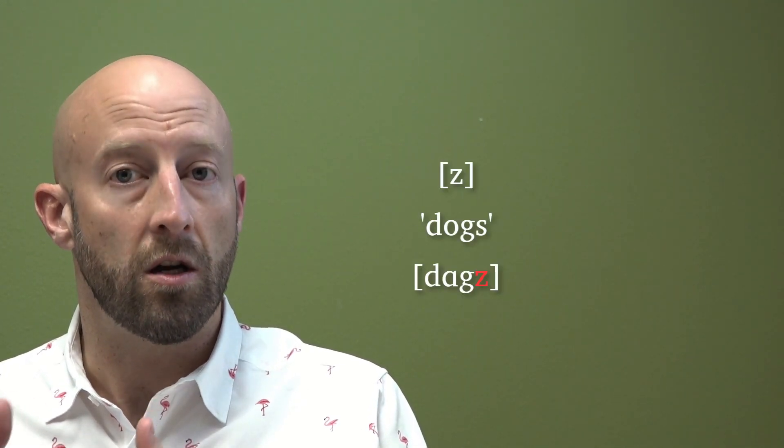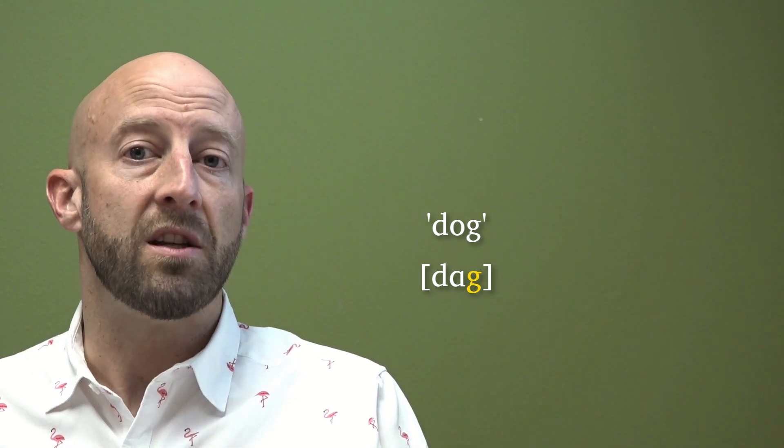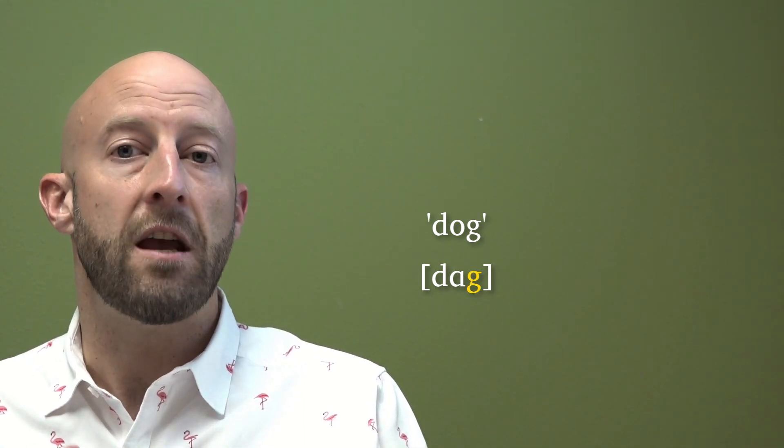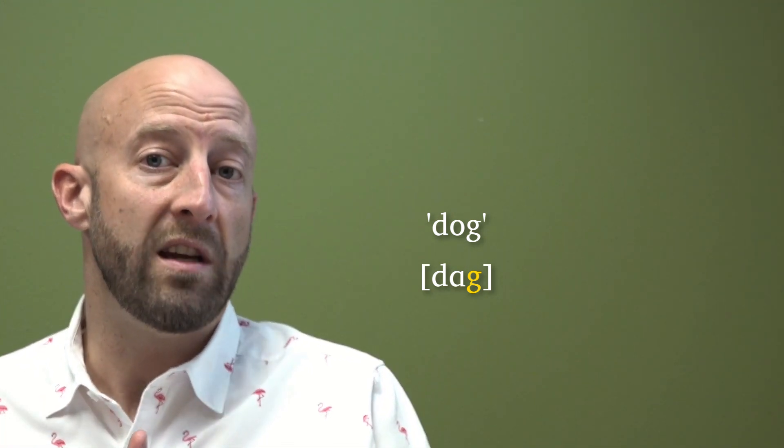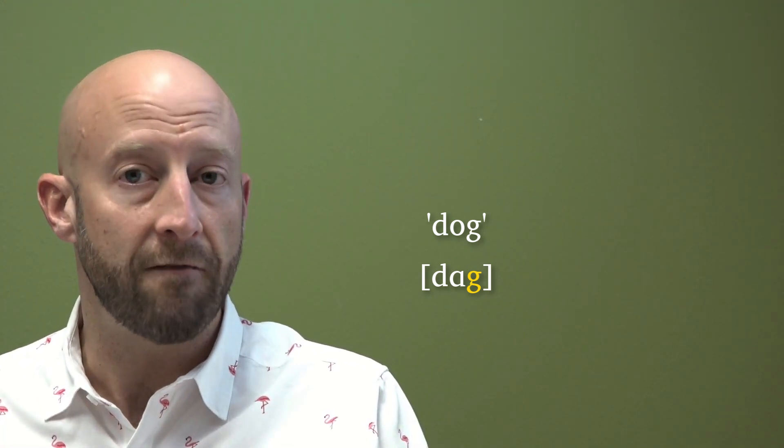But if we take a word like dog, well, this gets a different allomorph for the plural. So instead of /s/, we get /z/, dogs, dogs. And that happens because dog ends with /g/, which is a voiced sound. Therefore, because of assimilation requiring, we get another voiced sound to come after it, dogs.